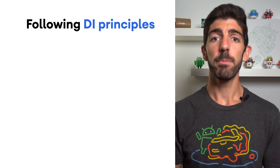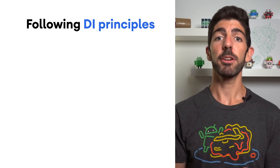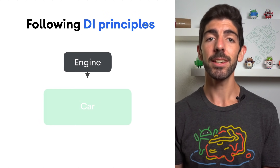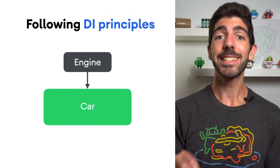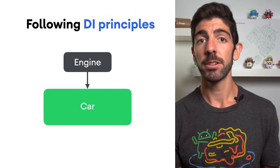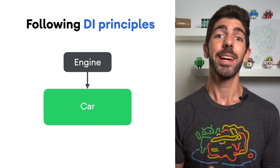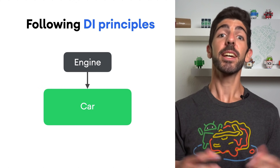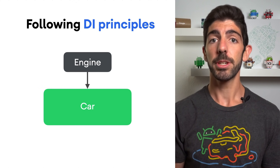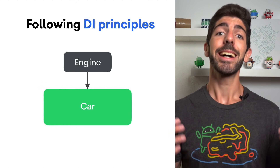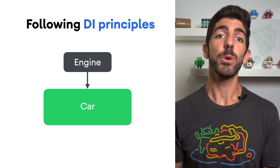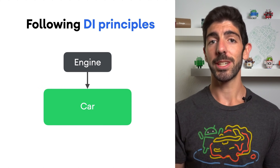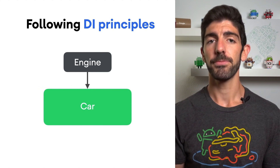With Dependency Injection, instead of CAR creating its own instance of engine, CAR receives an engine, for example, as a parameter in its constructor. This makes the CAR class reusable, as it can be used with different implementations of engine, and it's also easier to test.